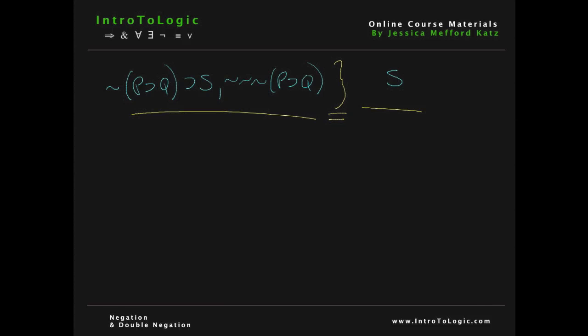The first thing that we're going to do when writing a formal argument is draw a scope line. And then you want to write your premises or assumptions that you're already given, which happen to be on the left-hand side of this bracket. So the first assumption is going to be, it's NOT the case that IF P THEN Q THEN S, and the second premise is NOT NOT NOT IF P THEN Q. The next thing we're going to do is write our conclusion at the bottom. In this case, the conclusion is S.